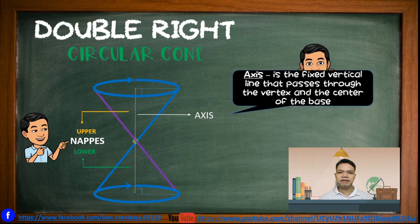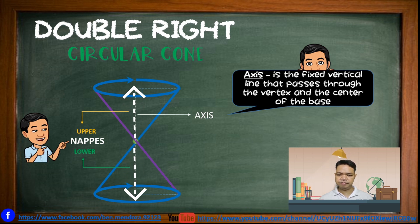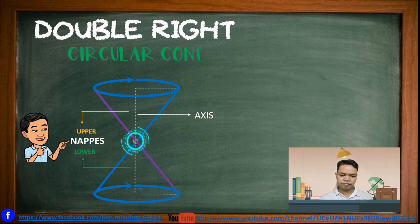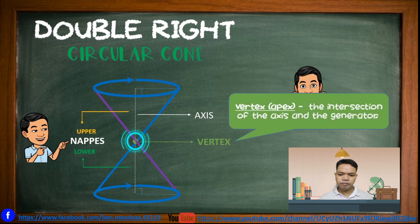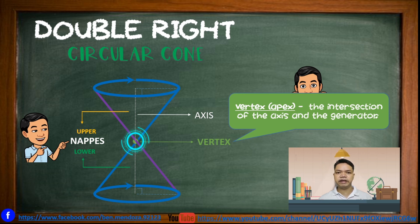An axis is the fixed vertical line that passes through the vertex and the center of the base. The vertex, sometimes called the apex, is the intersection of the generator and the axis.